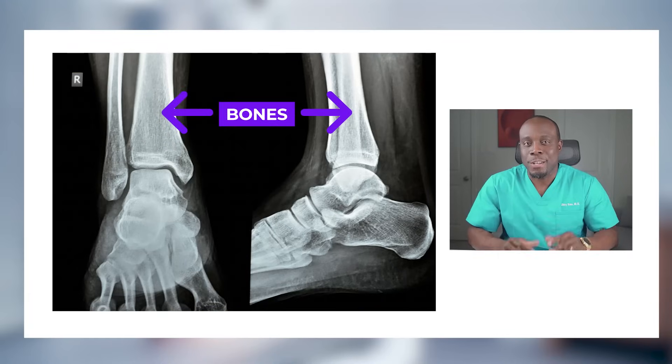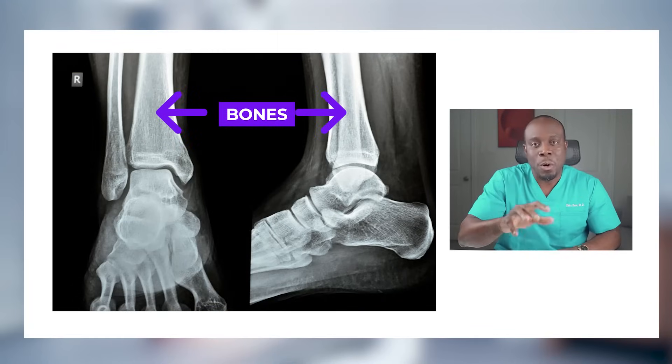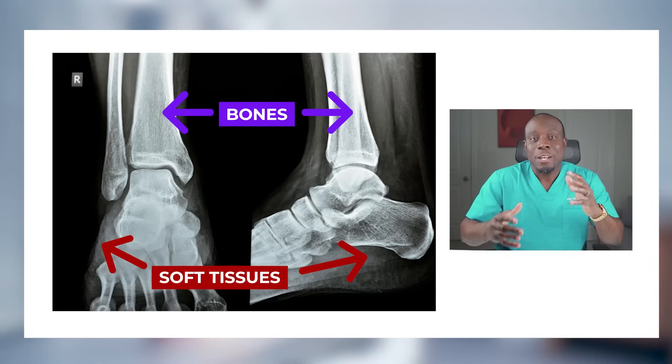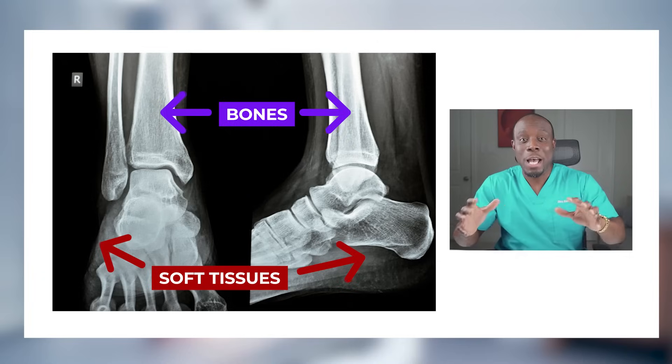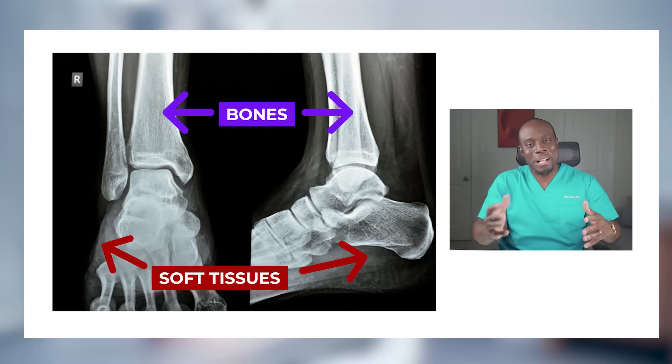When X-rays pass through your body, they are absorbed differently by various tissues and organs based on their density. Bones, for instance, are very dense, so they absorb a lot more X-rays and appear white on imaging. Soft tissues, which are less dense, absorb less and look more gray and not as clear as bones. This contrast helps us identify fractures, infections, or even foreign objects inside your body.